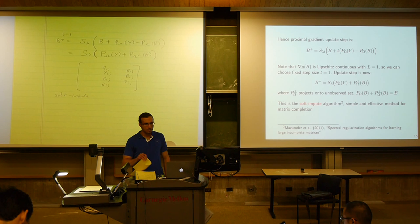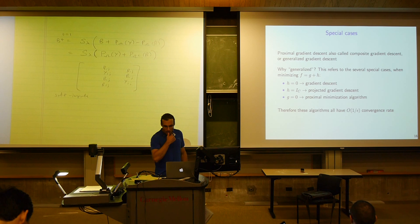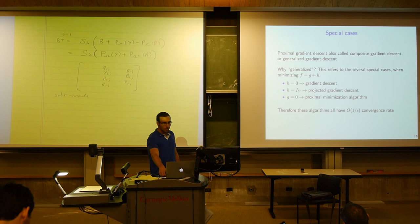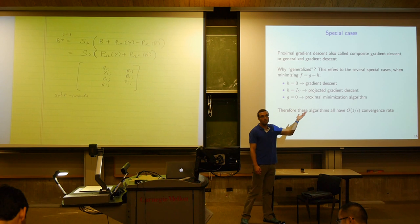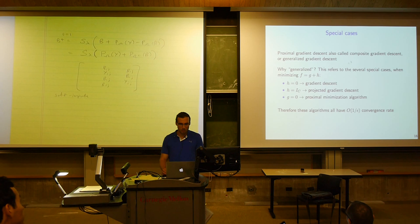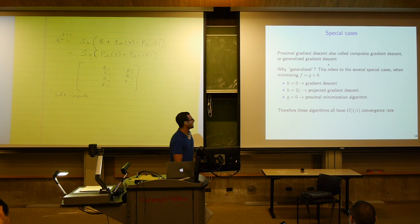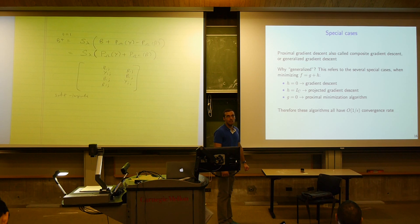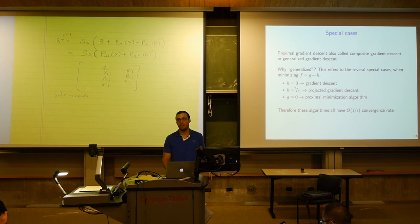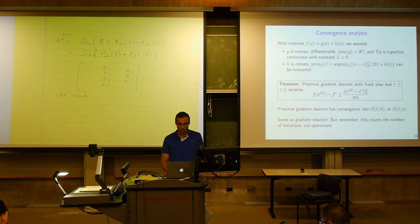Let's look at some special cases of proximal gradient. It's sometimes called composite gradient descent or generalized gradient descent. This is a nice name because it reminds us that this is a generalization of many gradient descent type algorithms we already know. When h is 0, we just get back gradient descent, because the prox operator of the zero function is just the identity — you pass in x and get x back — so we're just doing gradient descent on g.